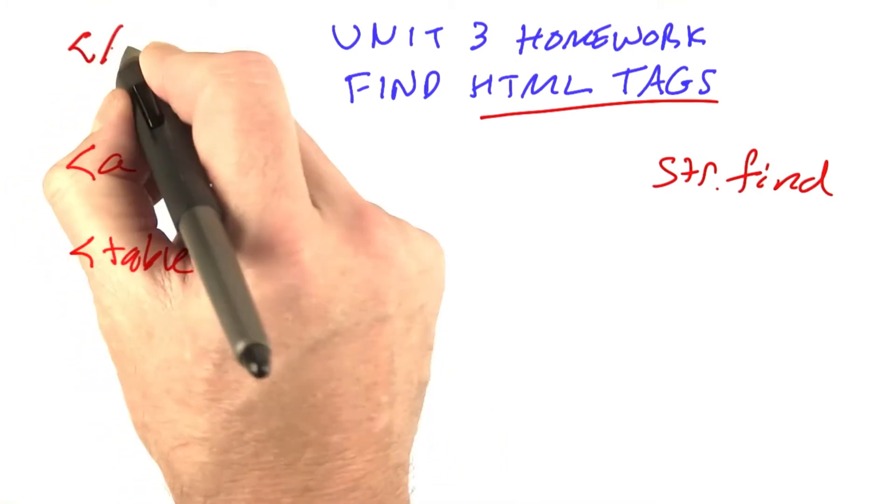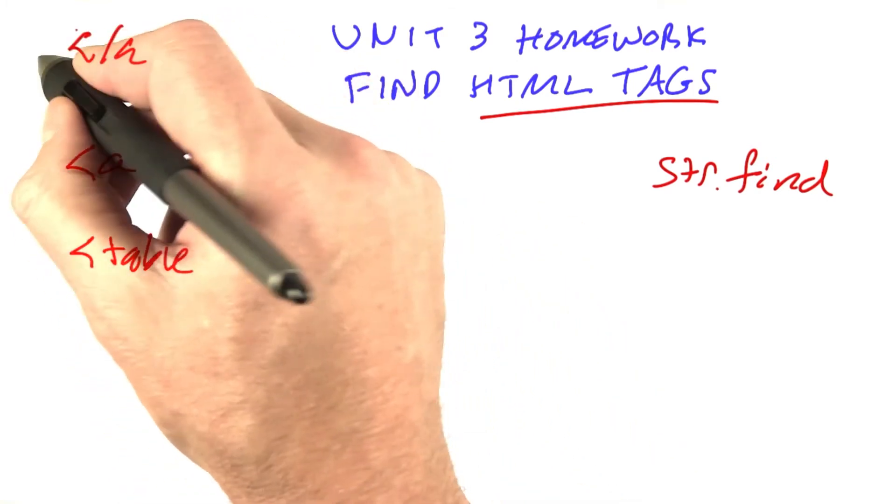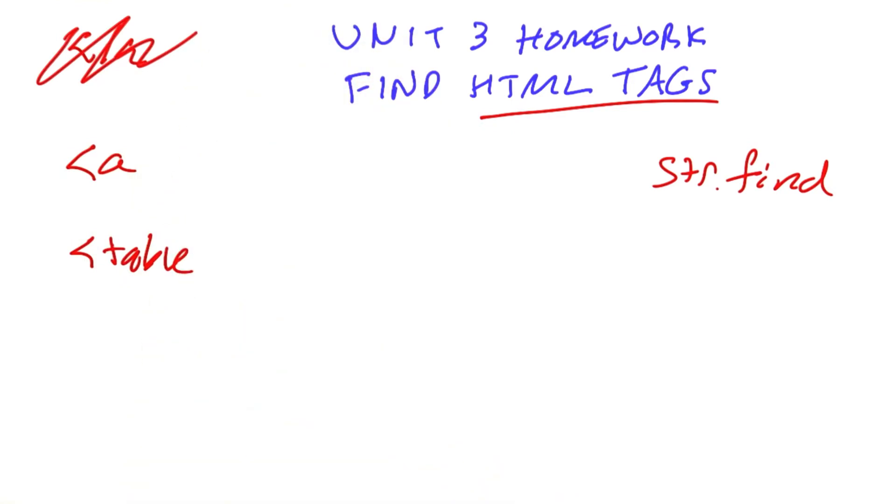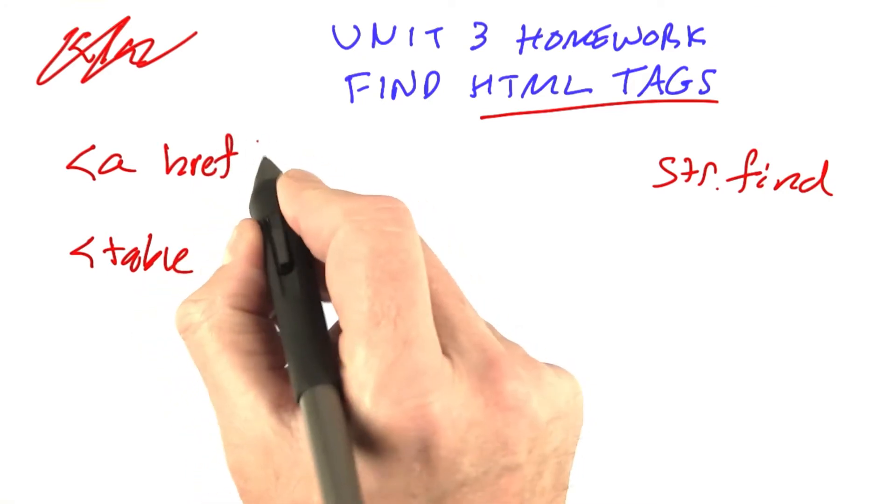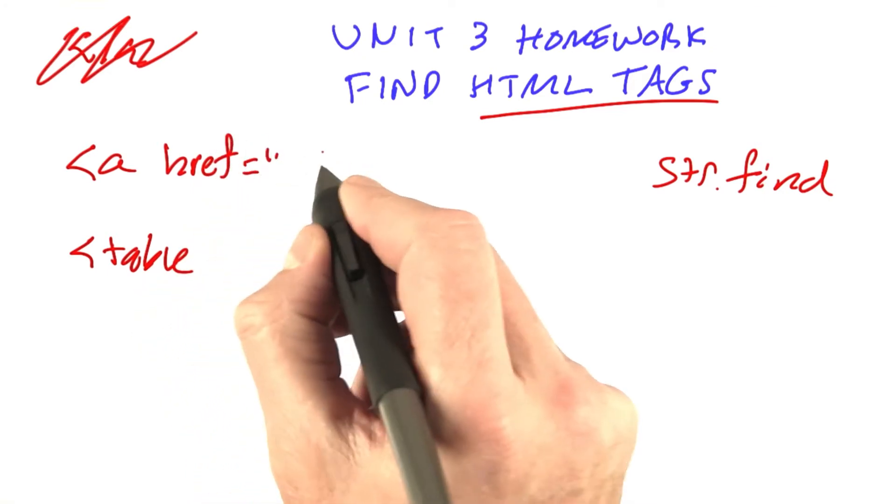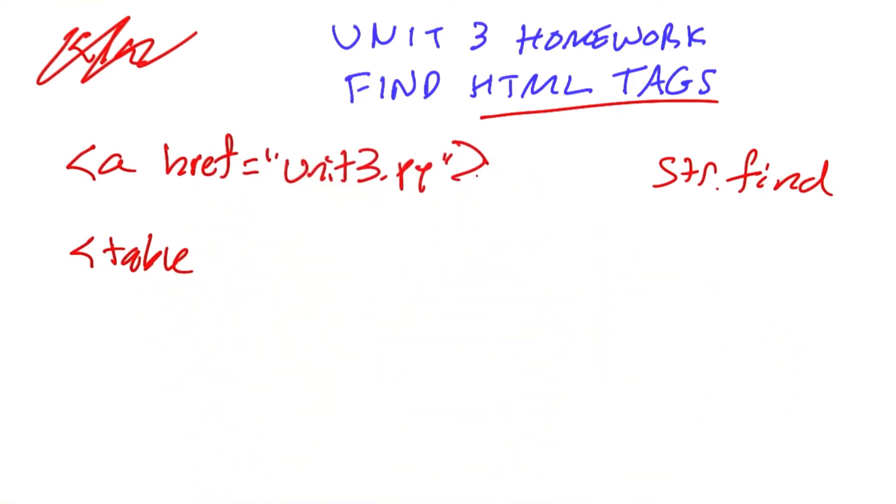I'm not looking for the end tags, so don't worry about those. Just the start tags, and then something like A, and then a set of attribute value pairs, and then a closing angle bracket.